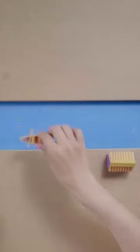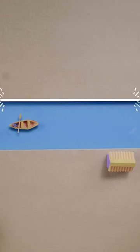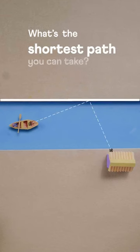You are boating in the middle of a canal and want to visit a museum on this side. But first, you also want to visit the other side of the canal. What's the shortest path you can take?